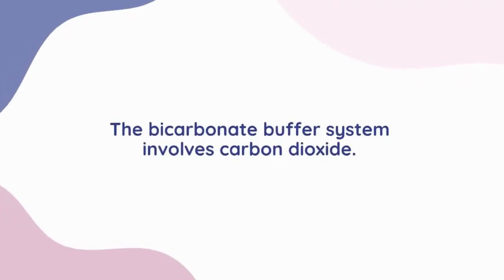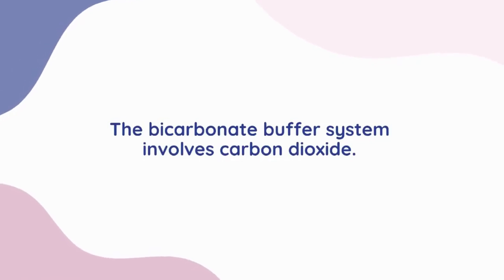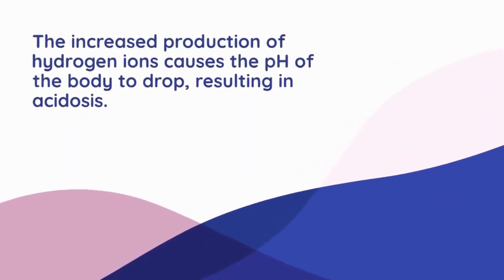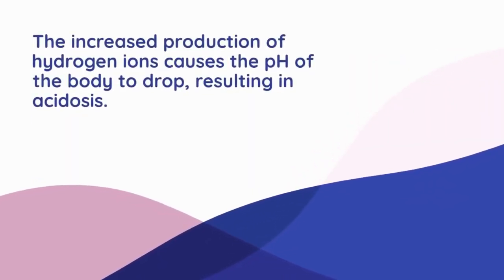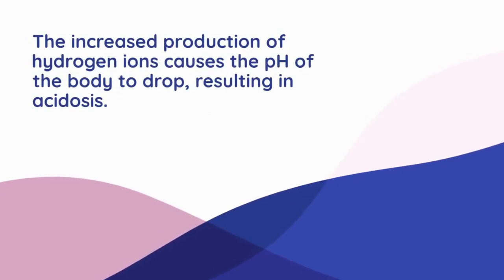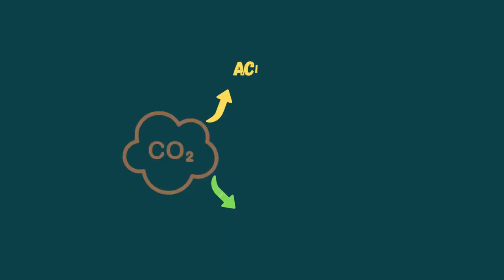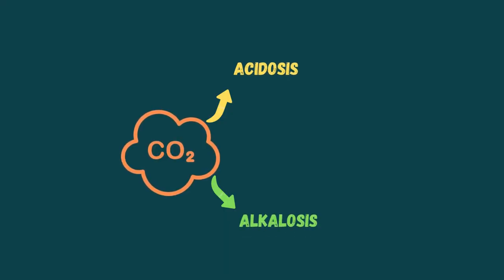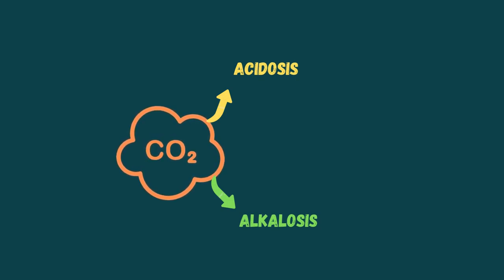As we know, the bicarbonate buffer system involves carbon dioxide. The increased production of hydrogen ions causes the pH of the body to drop, resulting in acidosis. What we know until now is that an increase in the level of CO2 causes acidosis, whereas a decrease in level causes alkalosis.